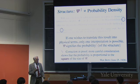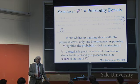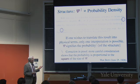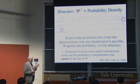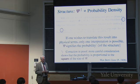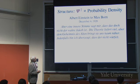Born wrote: 'only one interpretation is possible — ψ signifies the probability of the structure.' But there was a footnote correcting a mistake set in type: 'more careful consideration shows that the probability is proportional to the square of ψ.' Why couldn't it be proportional to ψ itself? Because ψ can be negative — you can't have a negative probability. It's the square of ψ, not ψ itself, that gives probability density.